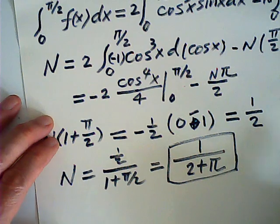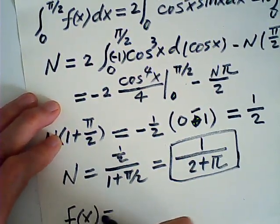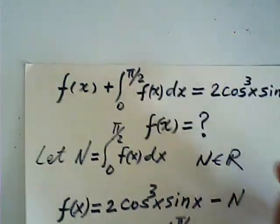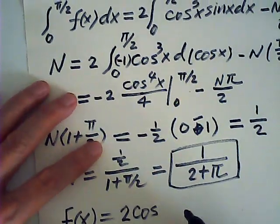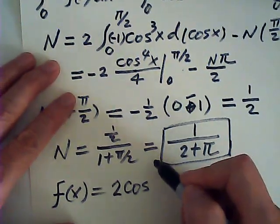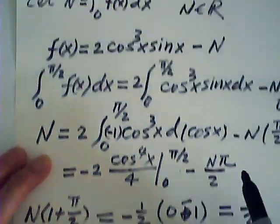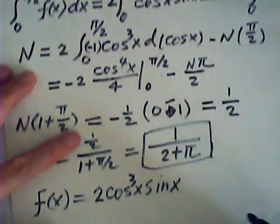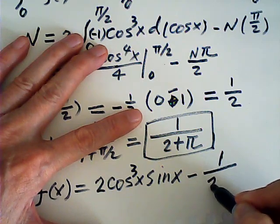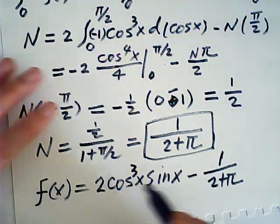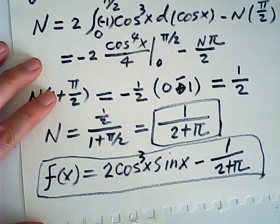And then we are looking for f of x, right? So f of x, according to this one, it is equal to 2 cosine cubed x sine x minus N, minus 1 over 2 plus pi. So this is my f of x we are looking for.